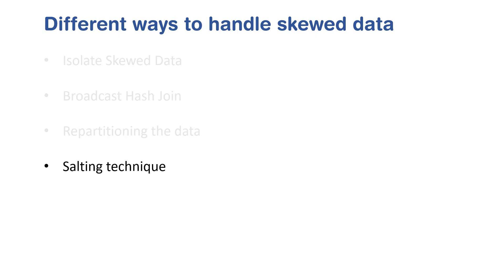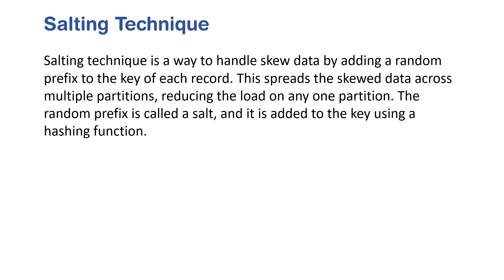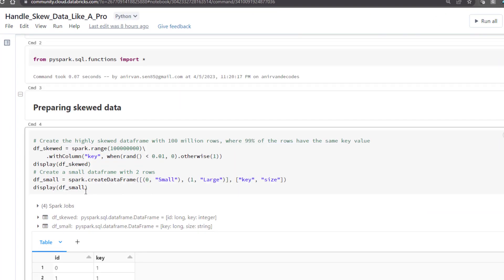The salting technique is a way to handle skew data by adding a random prefix to the key for each record. This spreads the skewed data across multiple partitions, reducing the load on any one partition. The random prefix is called a 'salt' and is added to the key using a hashing function. The general idea is to distribute your keys — if you don't have an even distribution, you add some salt to the keys so they spread in a way that gives you more parallelism.